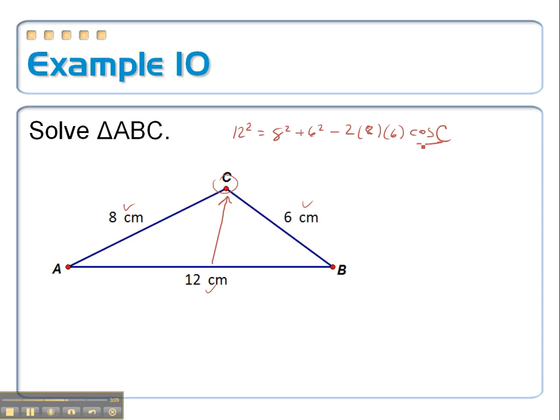So we have to get cosine of C by itself, and then we're going to take the inverse cosine. Now, I wouldn't recommend that you work all this out. These are pretty small numbers, so it'd be okay, and it'd be pretty easy to do, but the numbers could get kind of large and unwieldy, so just leave them squared like this, and then just solve it. So I have to add this to this side. Subtract that 12 squared over to the opposite side, and I'm going to have 2 times 8 times 6